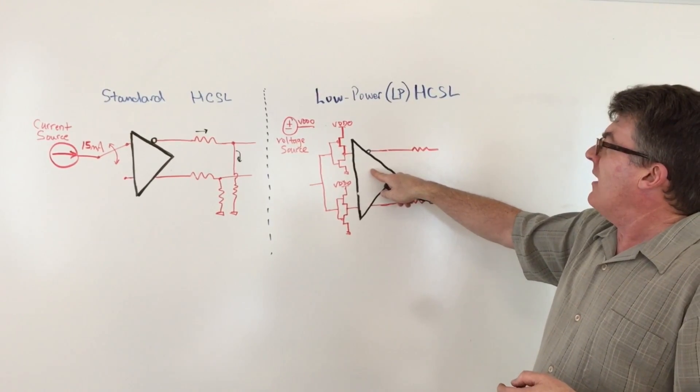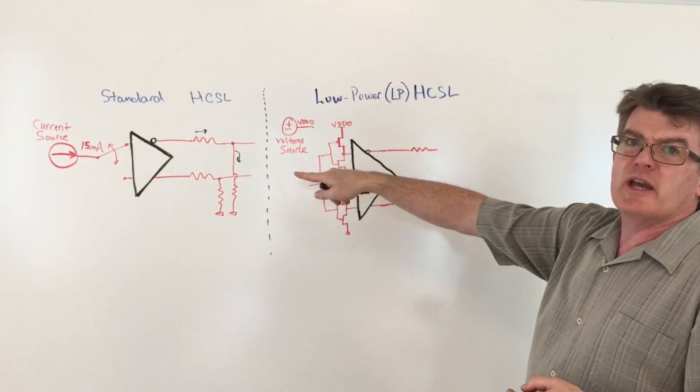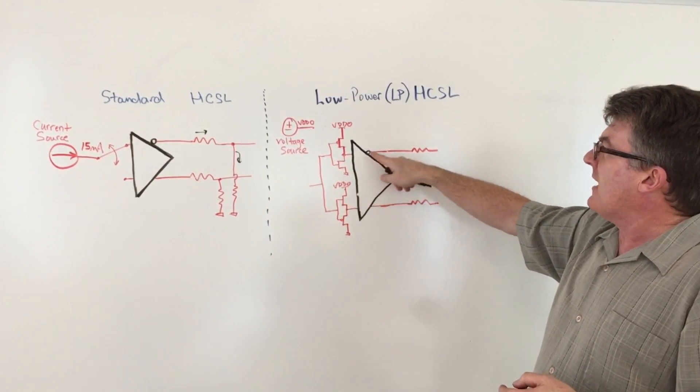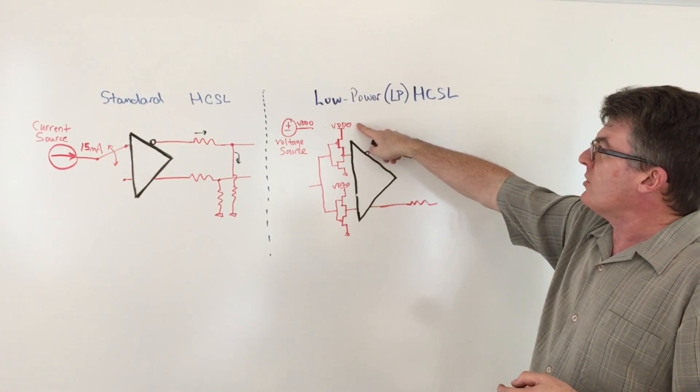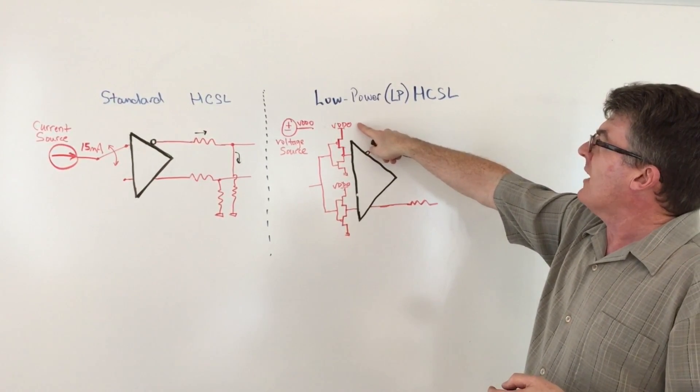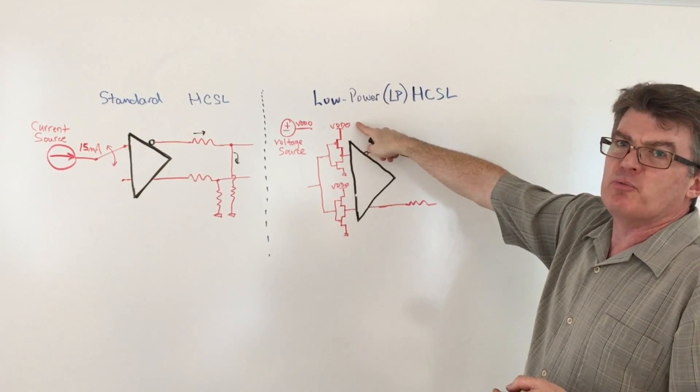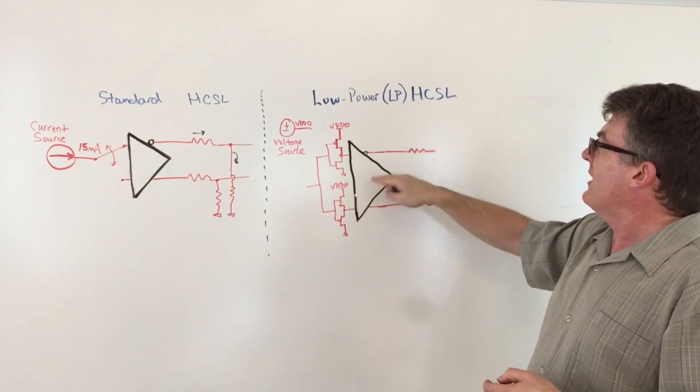So you're already one-third the power of the other guy. Because this is a voltage source or a voltage regulator, you can actually power this from something less than 3.3 volts to save more power.